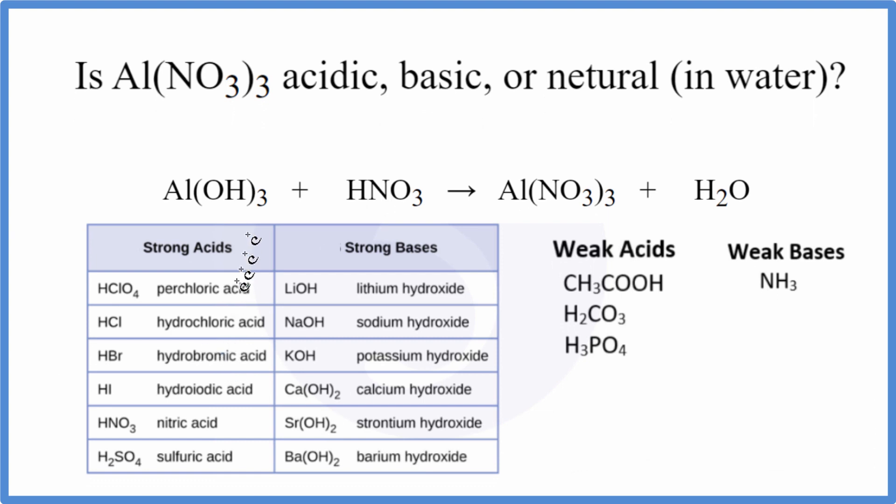So when we look on our table for aluminum hydroxide, it's not listed as a strong base. That means it's going to be a weak base, so we'll put WB up there.